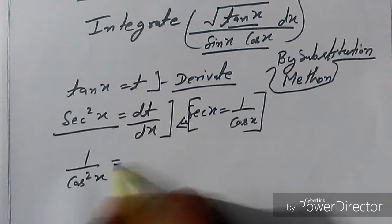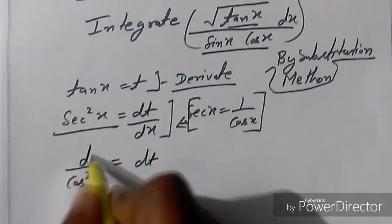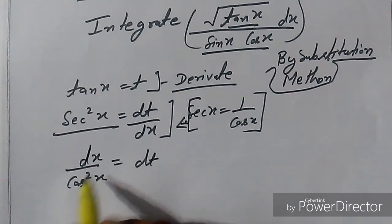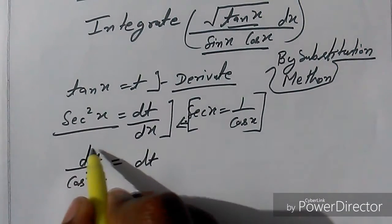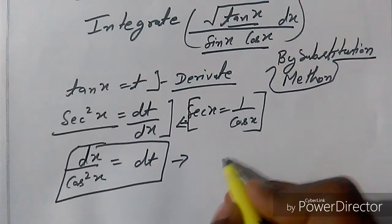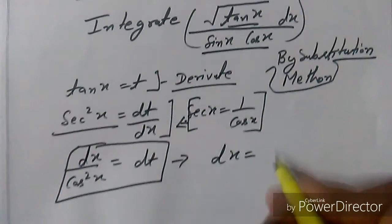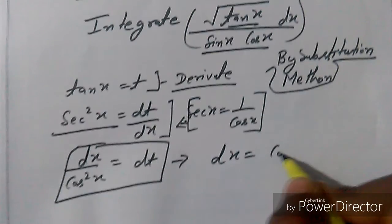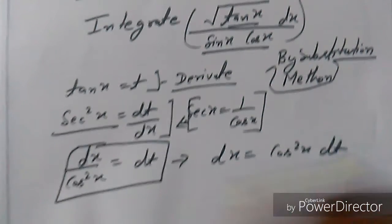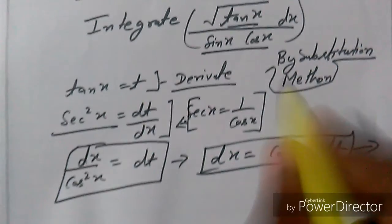So we get 1/cos²(x) equals dt/dx, which gives us dx equals cos²(x) dt. We will substitute this expression in place of dx in the integral.